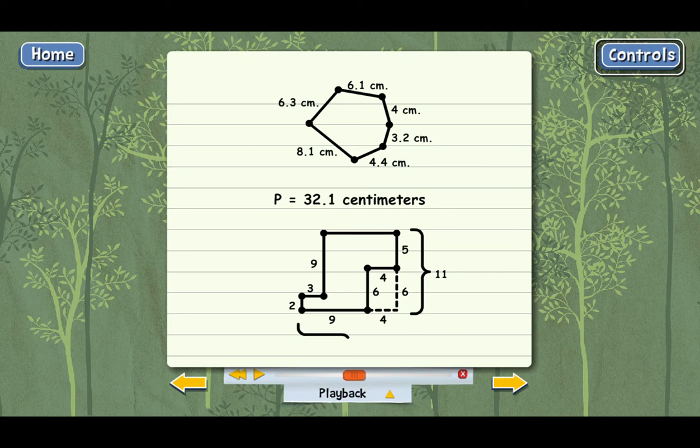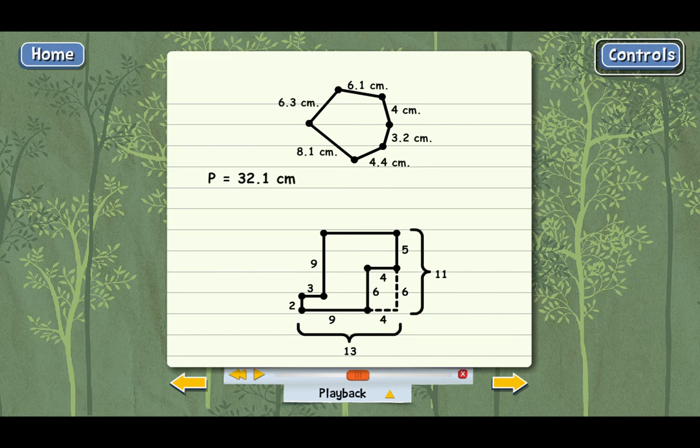Now we can see that the entire bottom part has a length of 13 because 9 plus 4 is 13. And with this information, we can figure out how long the top side is. Go ahead and figure out the top. Excellent. It has to be 10 because this entire length up here has to be 13, just like the bottom. And then there's 3 here and that leaves 10 for the top side.